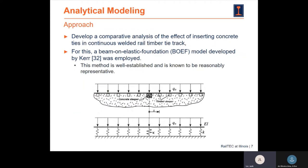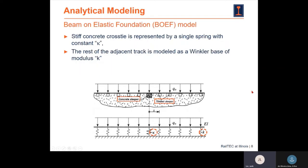The figure below shows the analytical modeling used to compare the effects of inserting a concrete cross tie into continuous welded rail timber cross tie track. The beam on elastic foundation (BOEF) model was used here, and the BOEF model is well established and known to be reasonably representative. For the stiffness of the concrete cross tie, kappa was used to represent the spring constant of the concrete cross tie, and k was used for the rest of the adjacent track based on Winkler.